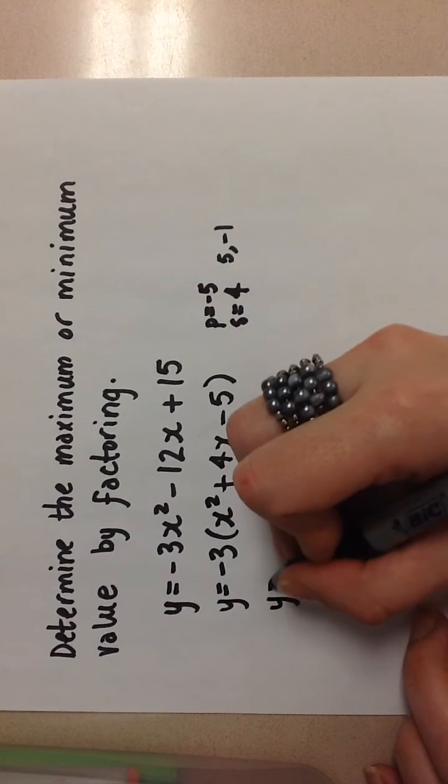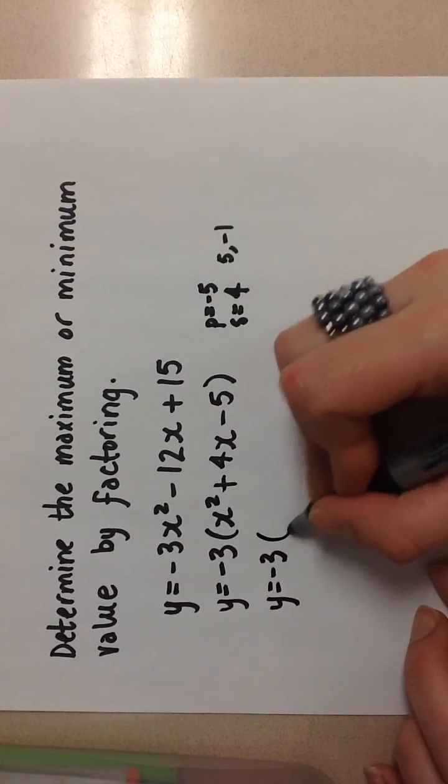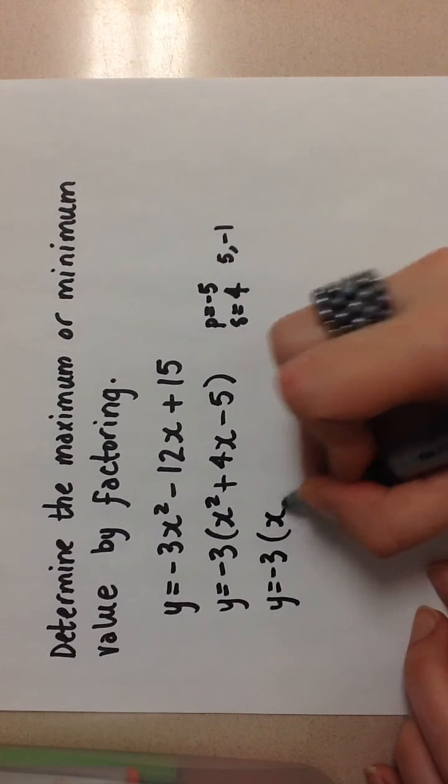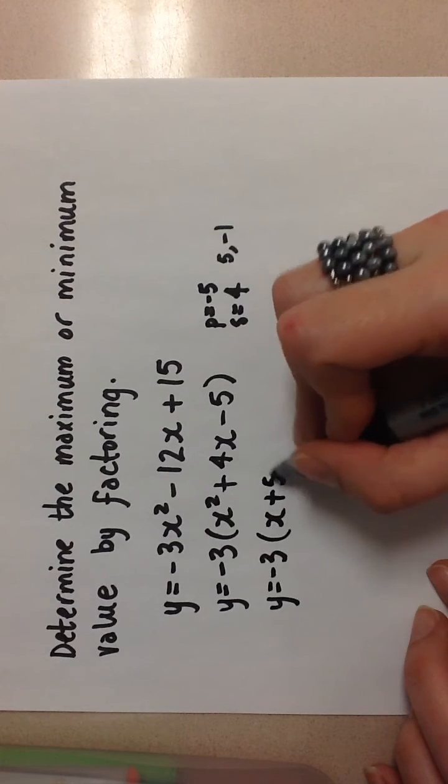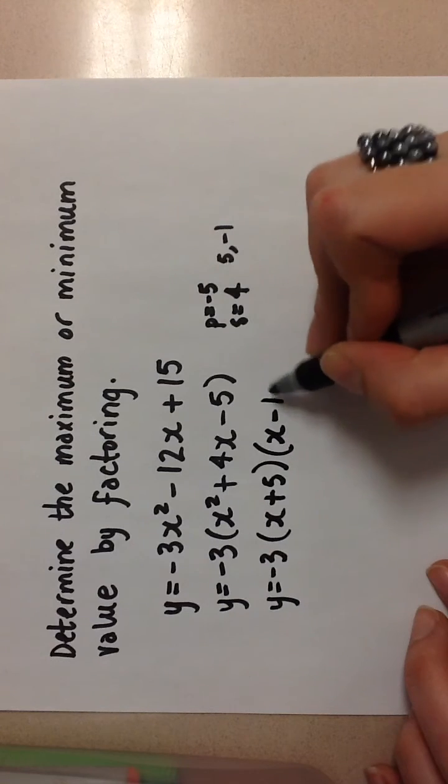So when I factor, make sure I keep that negative 3 outside of the brackets and then my two factors will be x plus 5 and x minus 1.